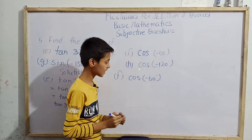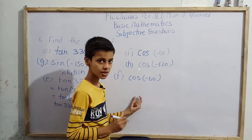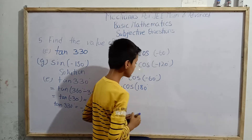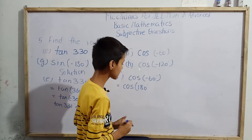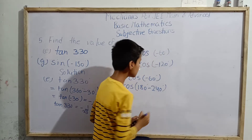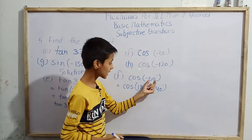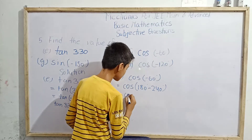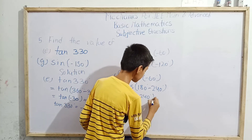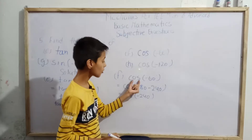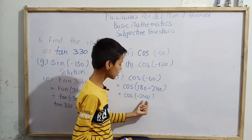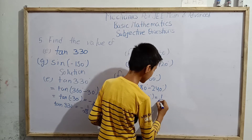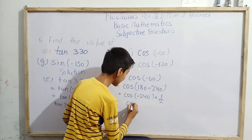Now part f: cos(-60°). We can write this in terms of 180°. We write cos(180° + (-240°)), because 180° + (-240°) = -60°. Since cos 180° = -1... multiplying, we get cos(-240°). So cos(-60°) = cos(-240°).